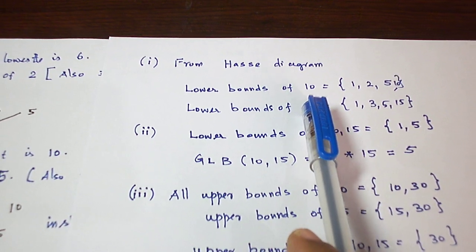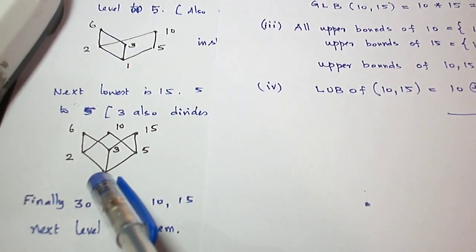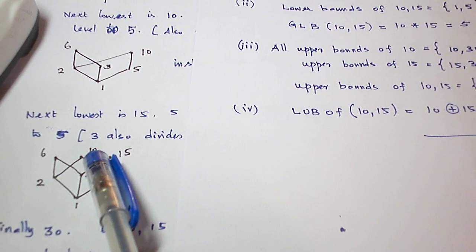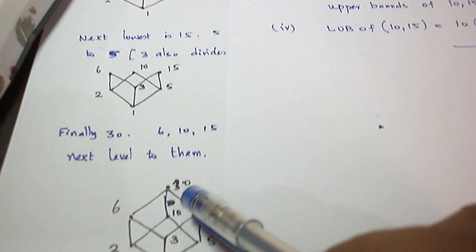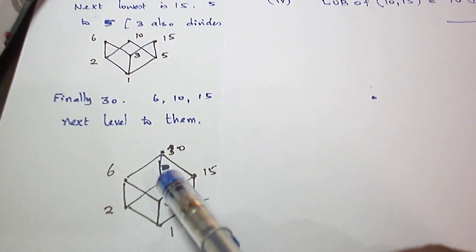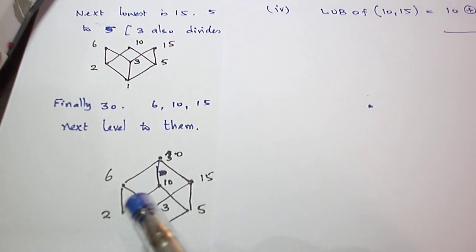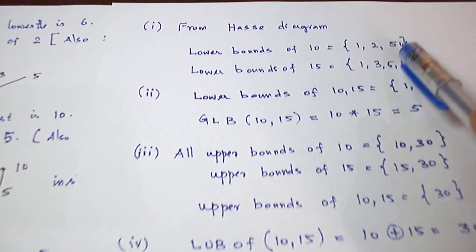We have drawn the Hasse diagram, and we are asked to find the lower bounds of 10. Look at the Hasse diagram. For 10, these are the lower bounds: 1, 2, 5, 10 are the lower bounds.